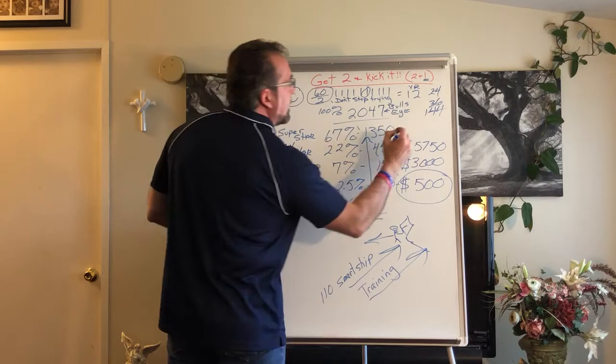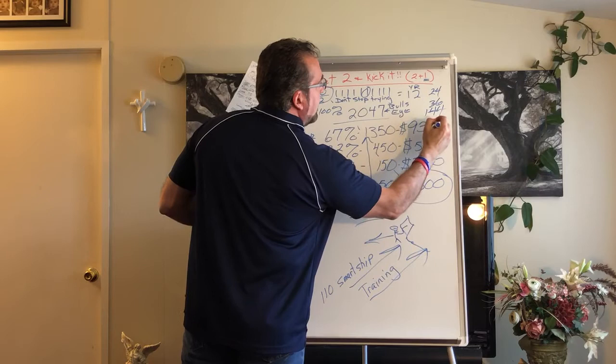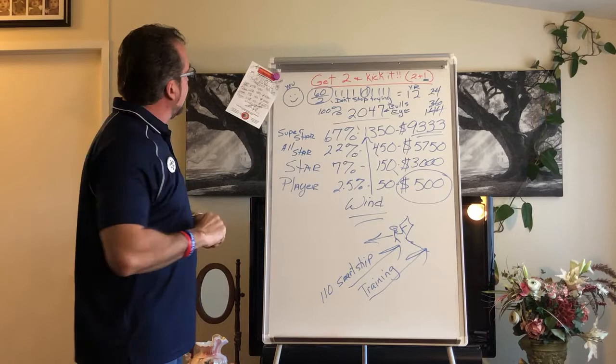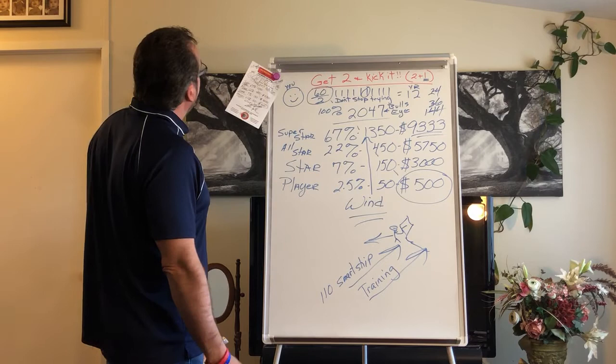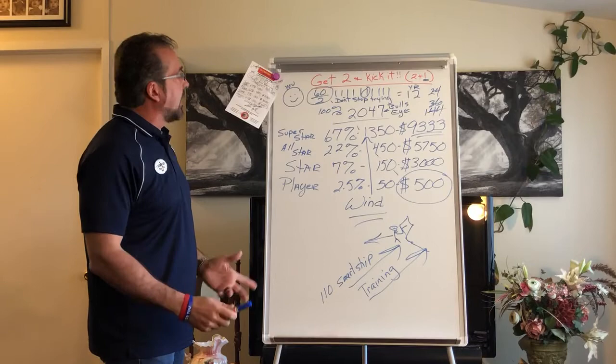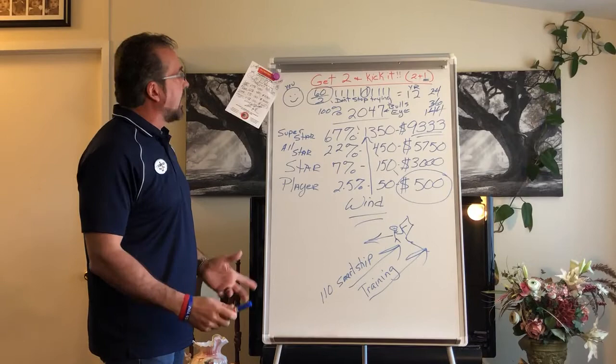And here's the superstar, 67 percent, with 1350 people. And away is going to pay you $9,333. Now let me look up here and see if I missed anything. Actually, it looks like I pretty much covered everything. So that's all you have to do, it's really simple.